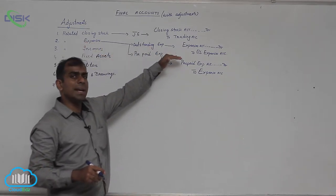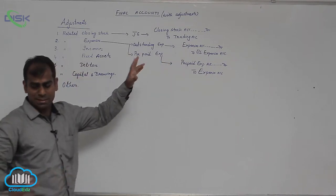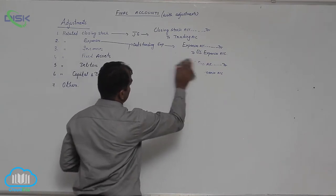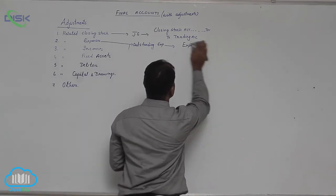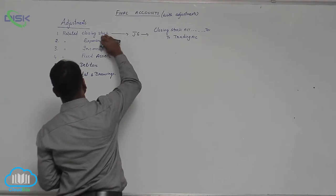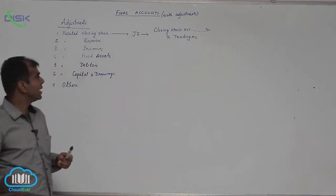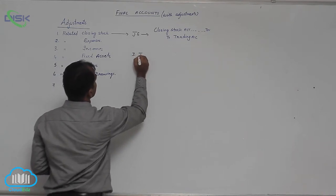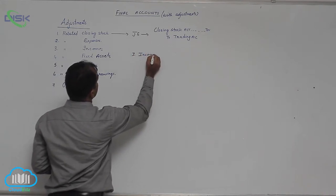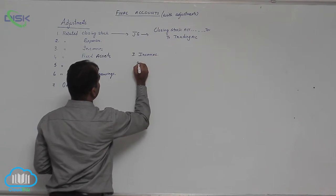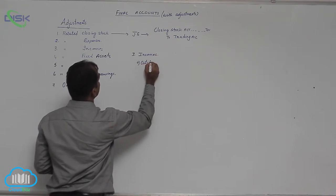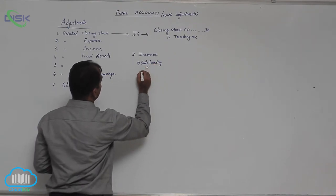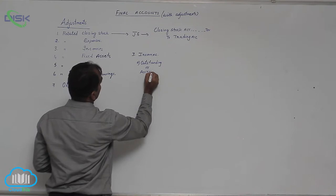One adjustment is outstanding expense and the other is prepaid expense. Now let us continue with incomes. Just as there are two adjustments for expenses, there are also two adjustments for incomes. For incomes, number three: you have outstanding or accrued income.